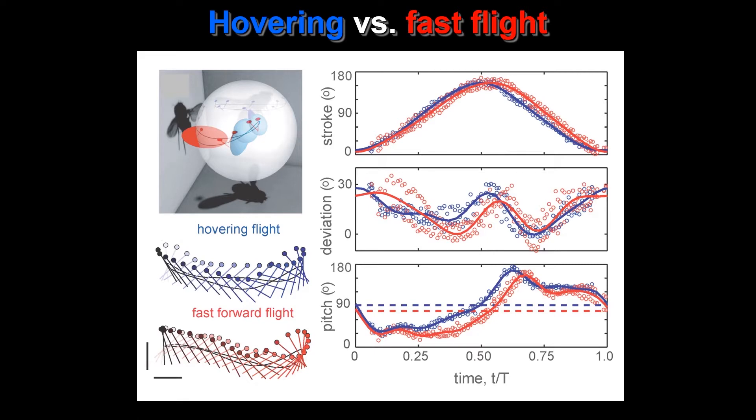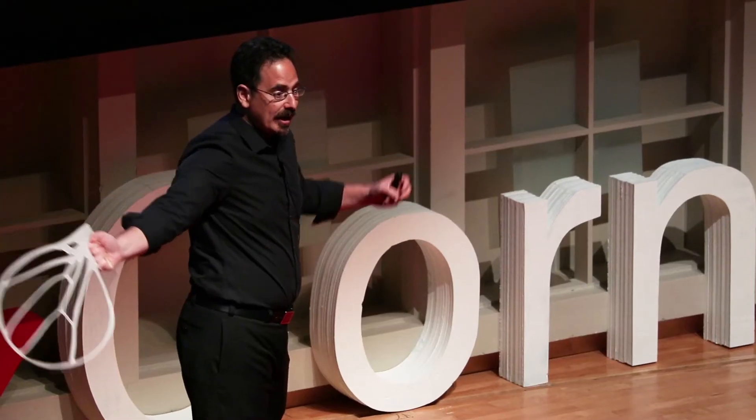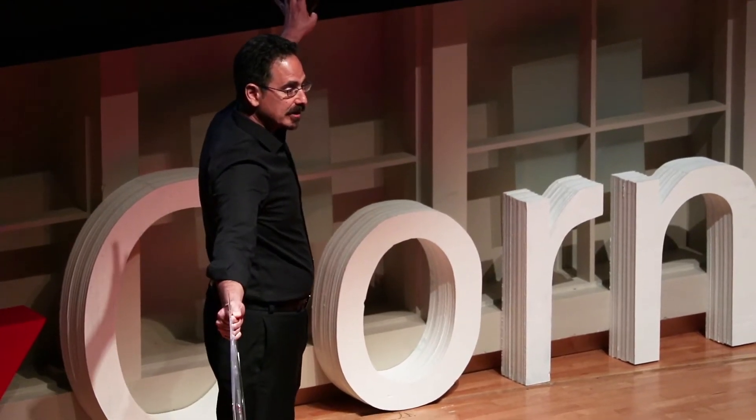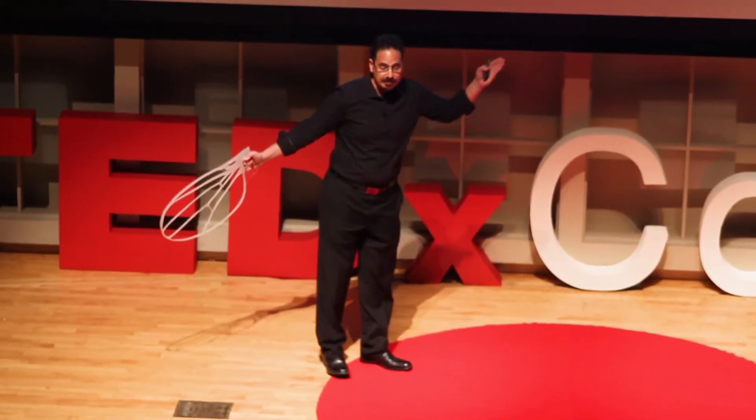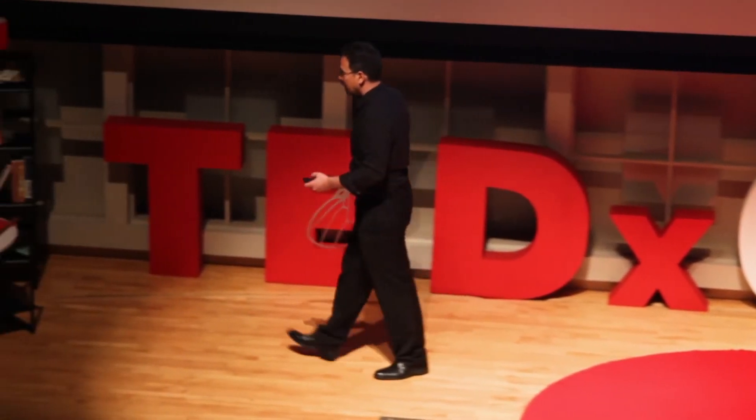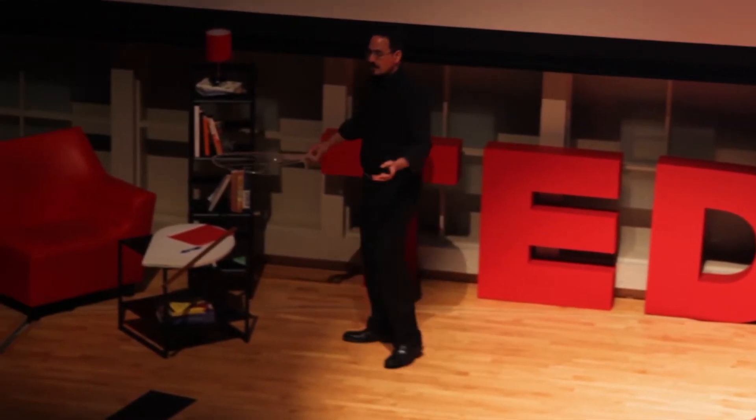And then the last curve is telling you about the pitch of the wing. This pitch goes from zero to 180 degrees, and what it says is that the fly is moving forward with an angle of 45 degrees, then it flips its wing and moves back at an angle of 135. In each of these cases, there are subtle differences between the blue and the red curves corresponding to the hovering fly and the fast-moving fly. Which of these differences is important?